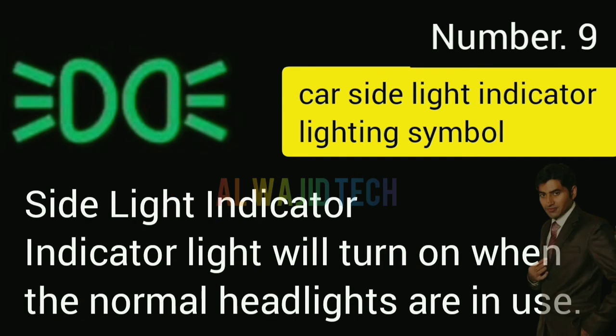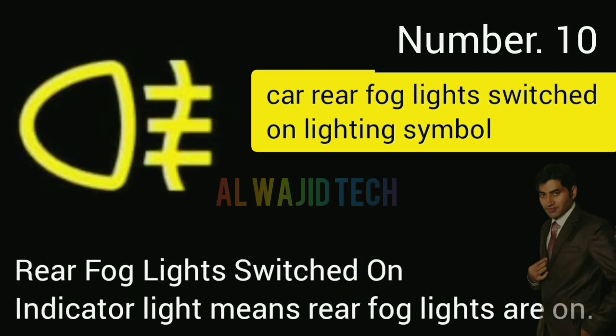Number nine: Car side light indicator will turn on when the sidelights are in use. Number ten: Car rear fog light switched on indicator means rear fog lights are on.